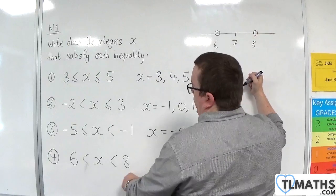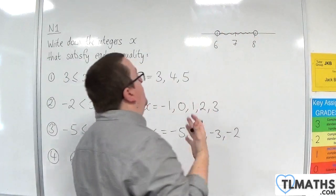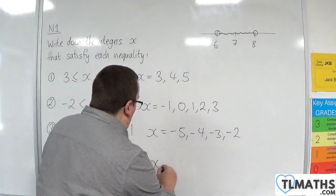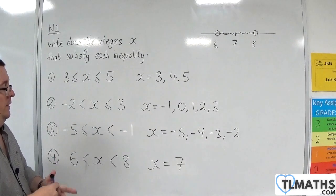Both 6 and 8 have hollow dots because they're strict inequalities. So we're not including 6, we're not including 8. So there's only one value of x that satisfies that inequality, and it's 7.